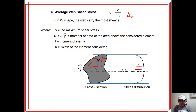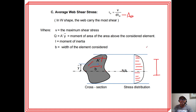Because the shear stress is maximum at the neutral axis, and the flanges are at the outermost part of an I-beam, the shear stress concentrates in the web. This applies to W-shapes, S-shapes, and channel sections as well — the shear stress is concentrated in the web.